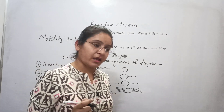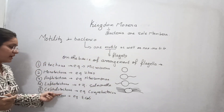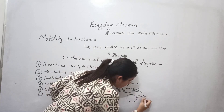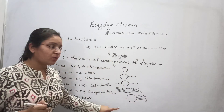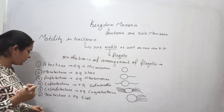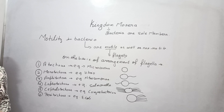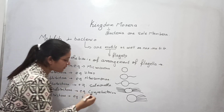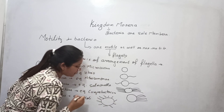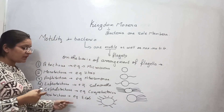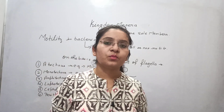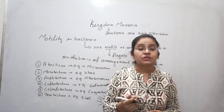Cephalotrichous bacteria have a bunch of flagella present for movement but only at one end. The example is Corynebacterium. Then peritrychous bacteria have flagella on their whole body — a large number of flagella are present all over the body. The example is E. coli, the bacterium found in the human intestine.